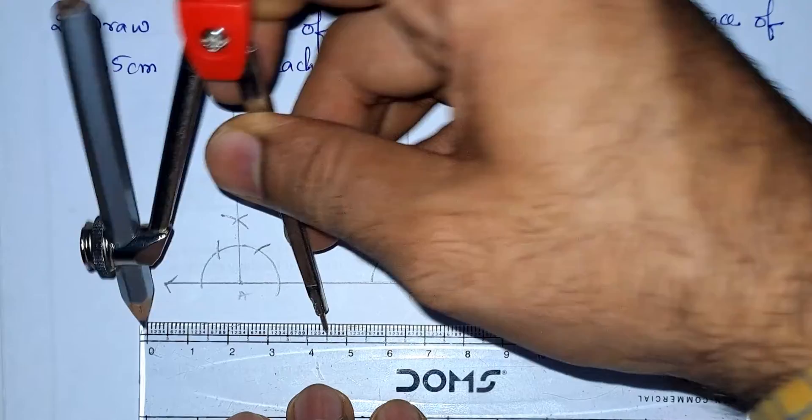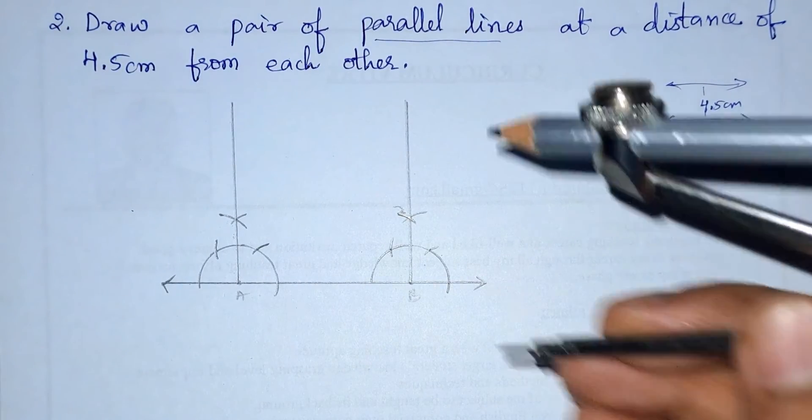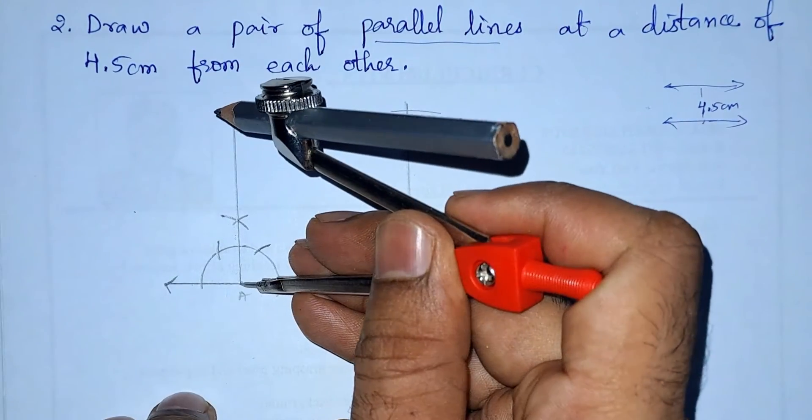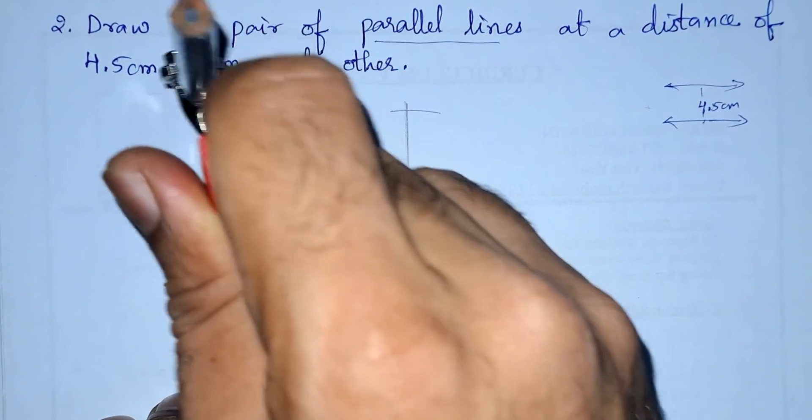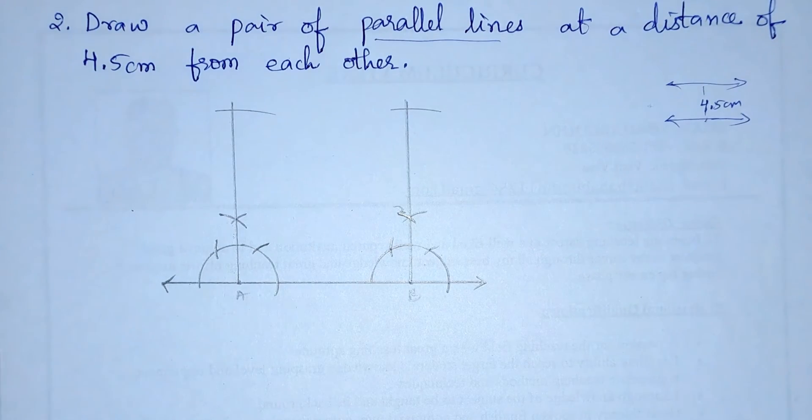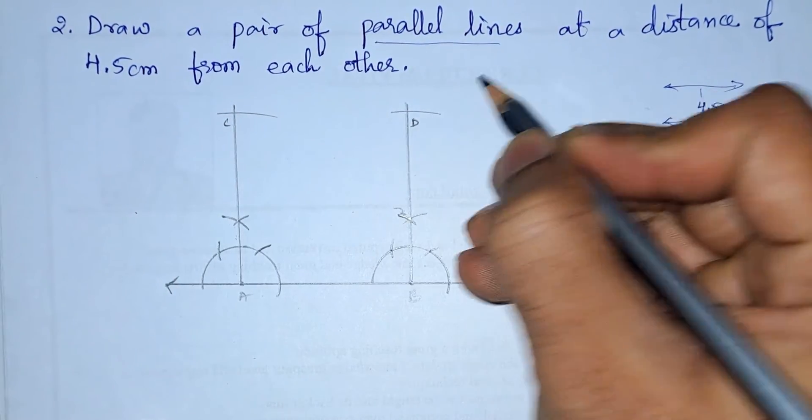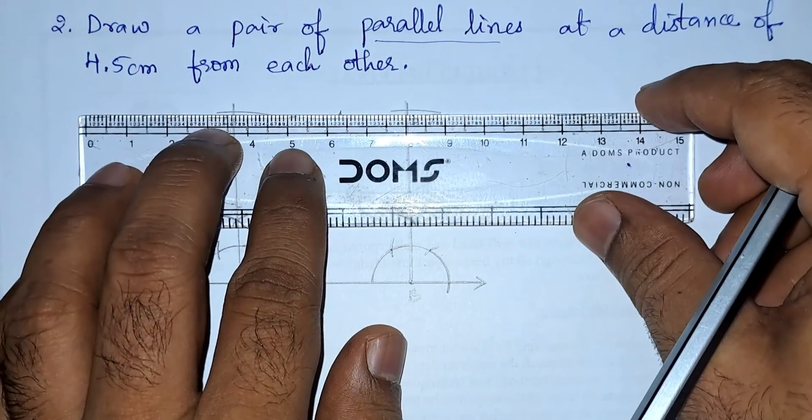Now from point B we will draw an arc which cuts this perpendicular line. Now from these points—let this point be C and D. So now let us join these two points.